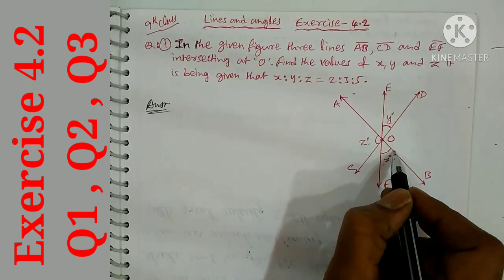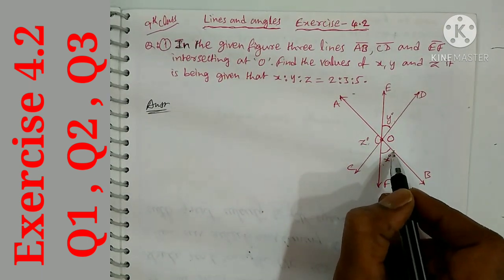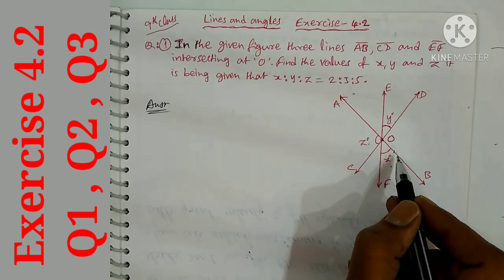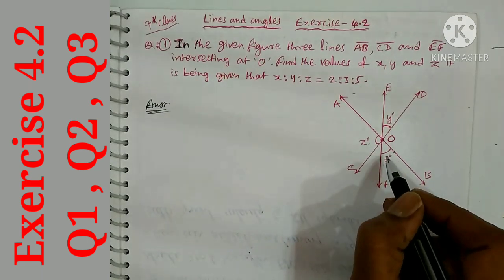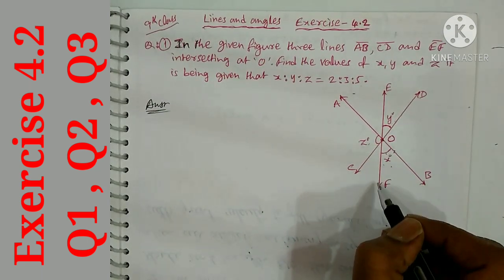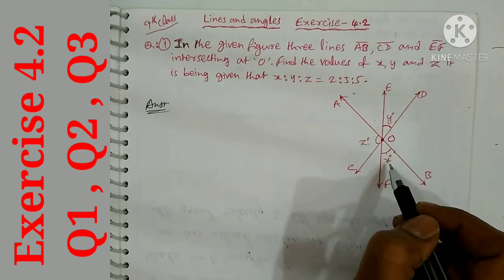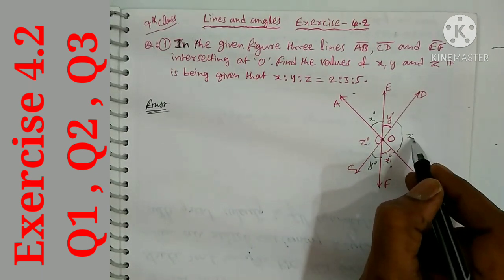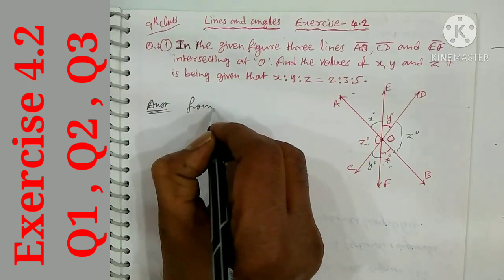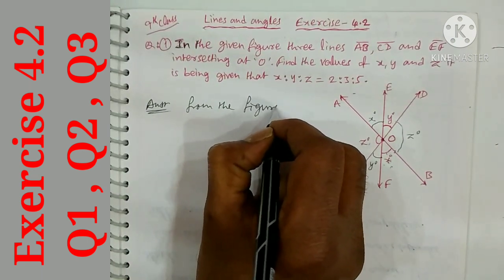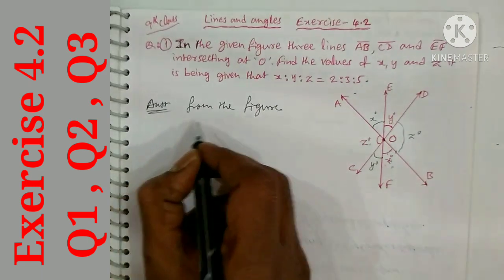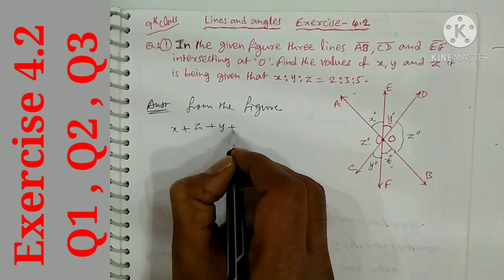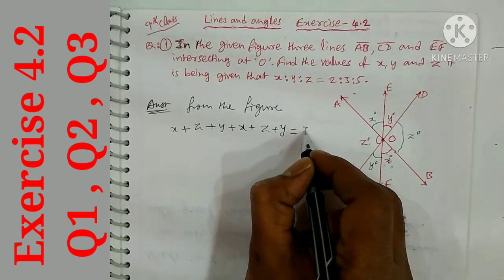We start by noting that a complete angle around point O is 360 degrees. From the figure, angle BOF and angle AOE are vertically opposite angles, and similarly for the other pairs. So we have x, x, y, y, z, z around the point. Therefore: x + z + y + x + z + y = 360 degrees.